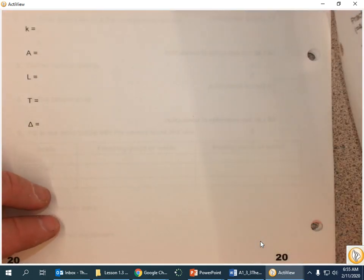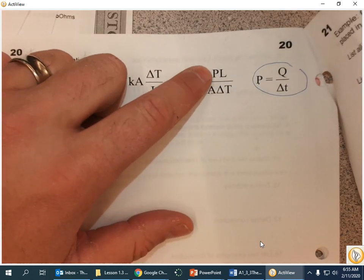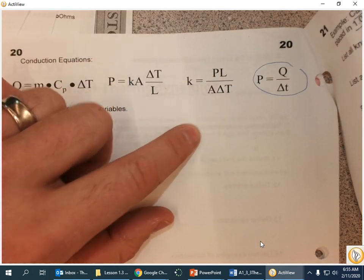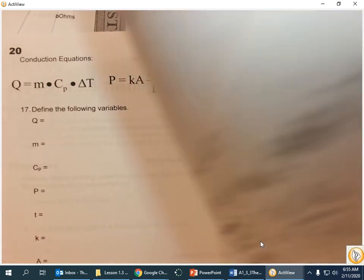So when I flip back here, it appears to me that formula-wise, I'm going to use PL over A delta T, because I have all of those things, and K is what stands for thermal conductivity.